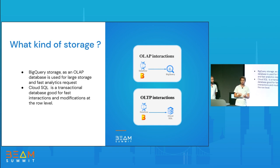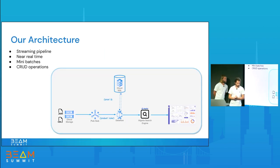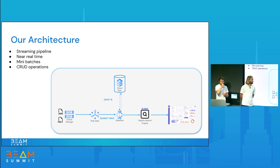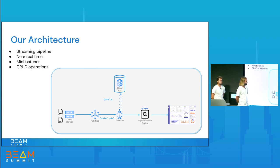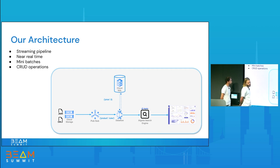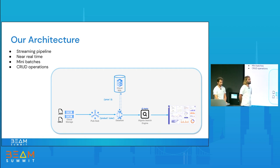We use the database like an external state. This slide introduces the architecture we built to solve our client's issue. First, we use Dataflow, which allows auto-scaling and large file handling. We know that near real-time can be achieved with Dataflow streaming mode. We use Cloud SQL as a transactional database for our SQL statements, and finally we use Cloud Storage and Pub/Sub depending on the case to feed our pipeline.